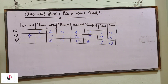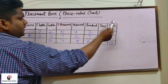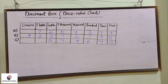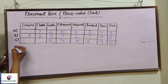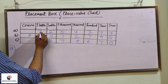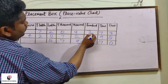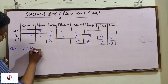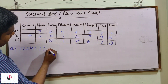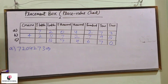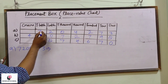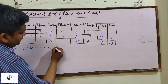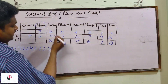You can see the place value chart: ones, hundreds, thousands, ten thousands, lakh, ten lakh, and crore. Now let us take this number: 8,72,04,273. Check — seven is at what place? Ten lakh. So seven will be multiplied with ten lakh.